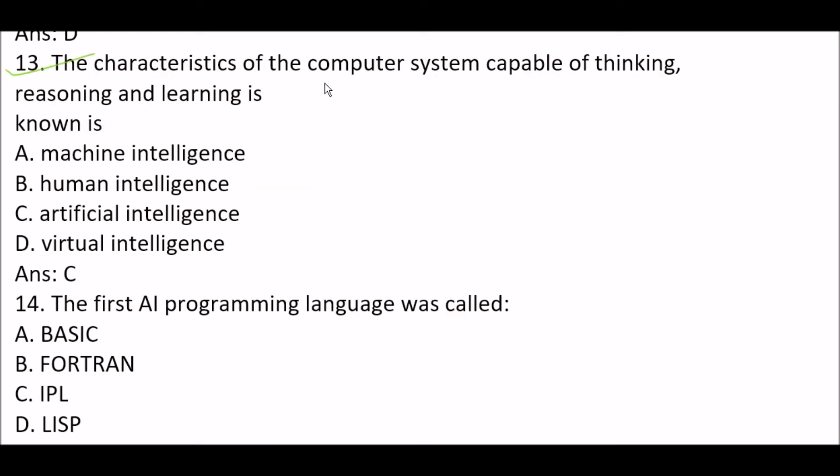Next question: the characteristics of a computer system capable of thinking, reasoning, and learning is known as artificial intelligence.